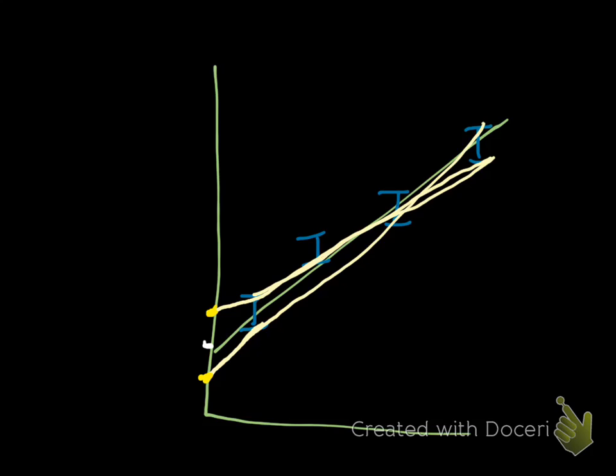So to find the uncertainty of the intercept, you take the highest intercept created by the min slope, and you take the lowest intercept created by the max slope.